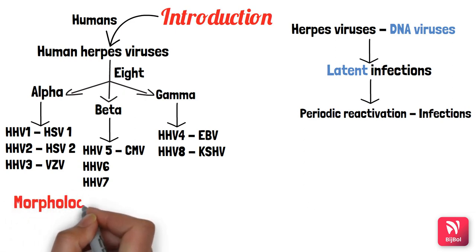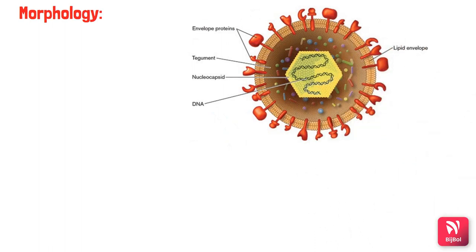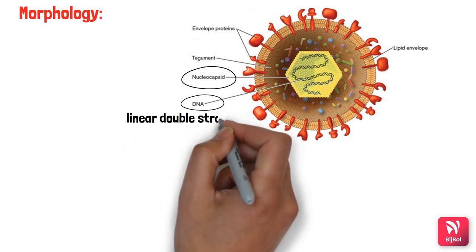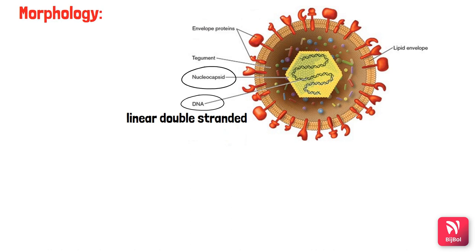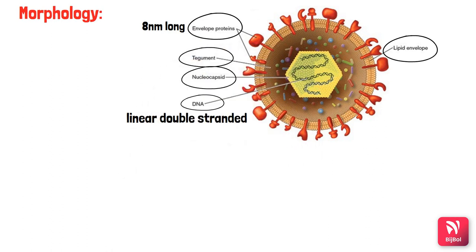Now let's see the morphology of herpes viruses. The nuclear capsid, present in the center, is icosahedral in shape and encloses the core which contains a linear double-stranded DNA. This nuclear capsid is surrounded by a lipid envelope from which spikes — about 8 nm long — project outward; these are called envelope proteins. Between the envelope and the nuclear capsid there is an amorphous structure called the tegument, which contains several proteins.